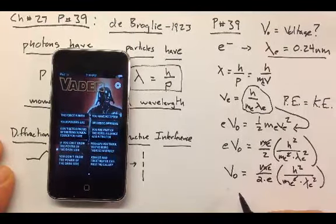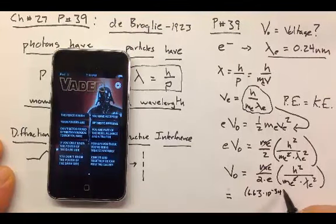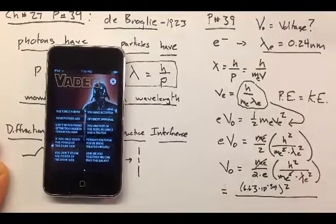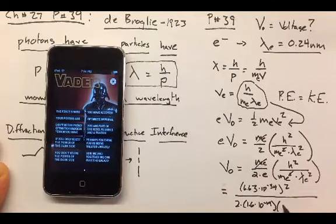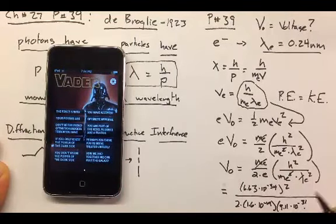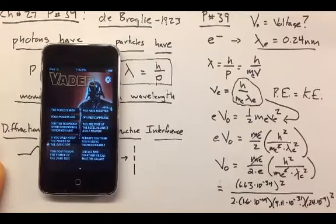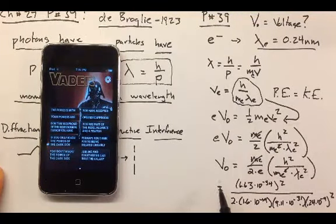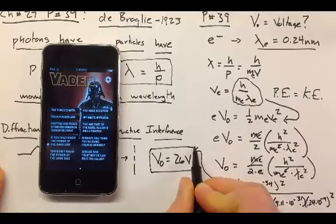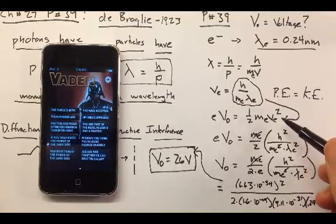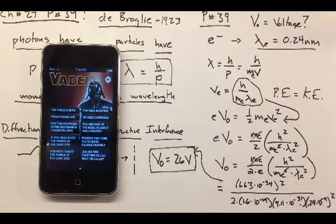Now, we're going to do some algebra here. So, on top, we have Planck's constant, 6.63 times 10 to the minus 34 squared. And on the bottom here, we have 2 times the charge on an electron, times the mass of an electron, times the wavelength, which is 0.24 times 10 to the minus 9th squared. So, that's a lot of numbers there, but basically, if you plug all of that in, you get that the electron has to be accelerated through a potential difference of 26 volts in order to acquire a speed so that its de Broglie wavelength will be equal to 0.24 nanometers.